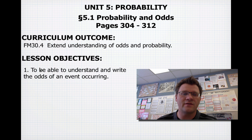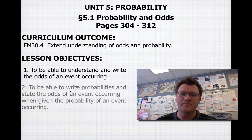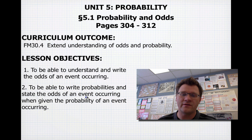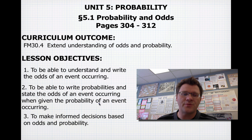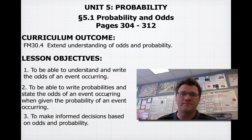Our lesson objectives today: first, to be able to understand and write the odds of an event occurring. Second, to be able to write the probabilities and state the odds of an event occurring when given the probability of an event occurring. And third, to make informed decisions based on odds and probability.